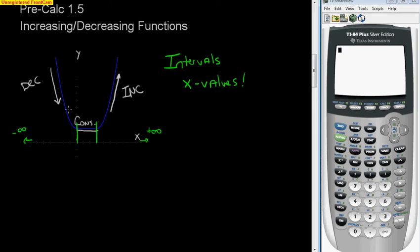Well, right here, from the far left, from negative infinity up to 0, that's where we have our first decreasing interval. So from negative infinity to 0, I know we are decreasing. Right here between where the line's flat, we are constant.